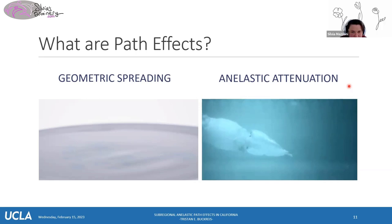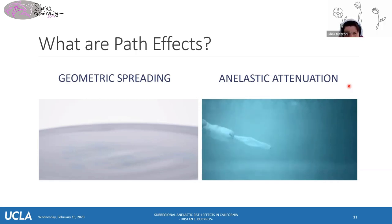So that's energy loss. The first one — geometric spreading — is just energy spread, while anelastic attenuation is literally energy converted into other forms.